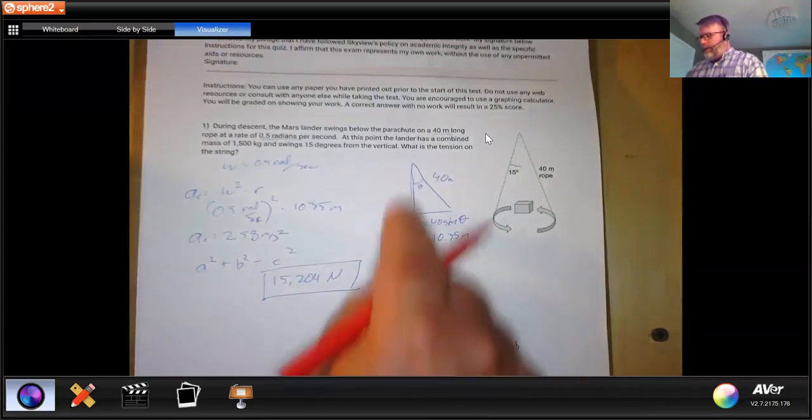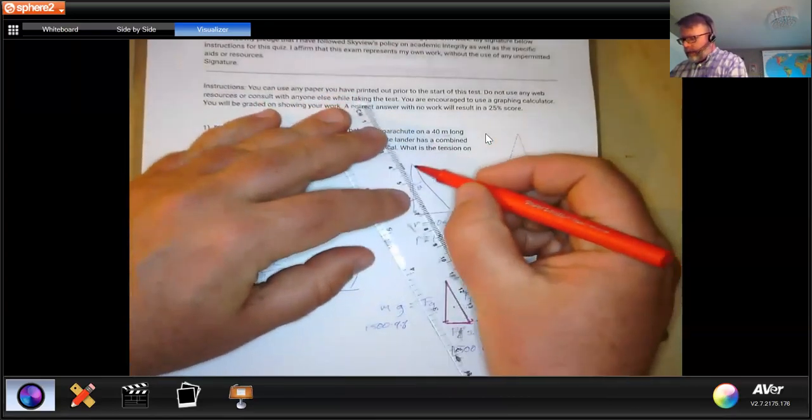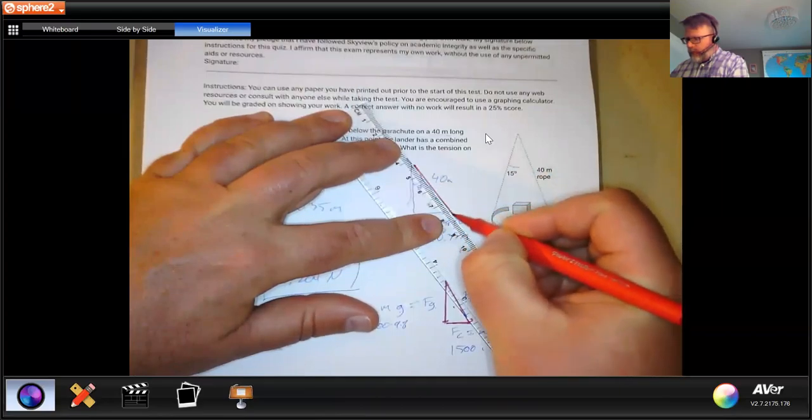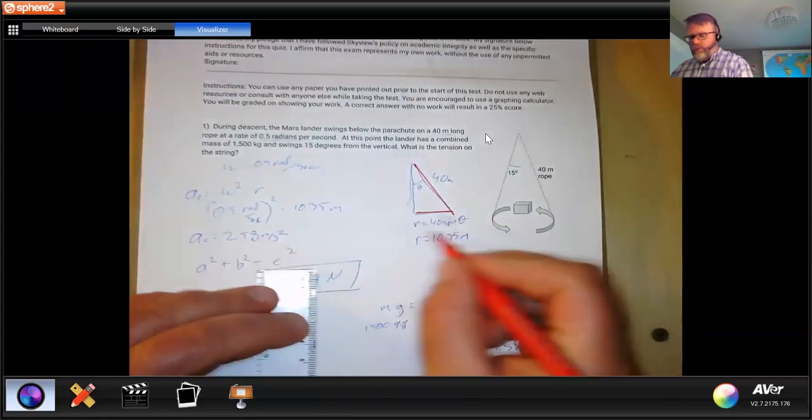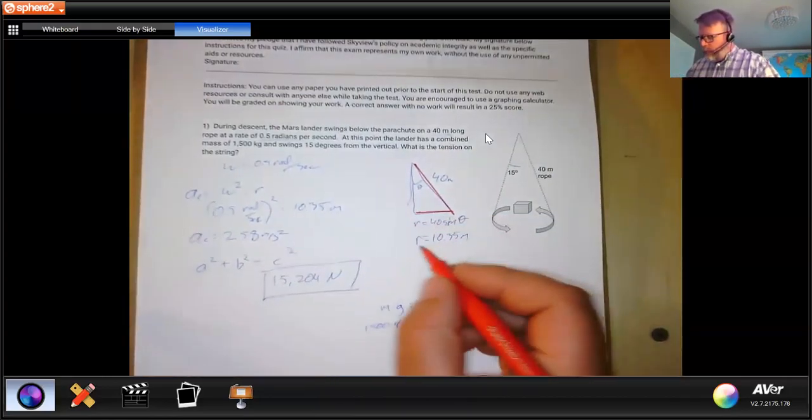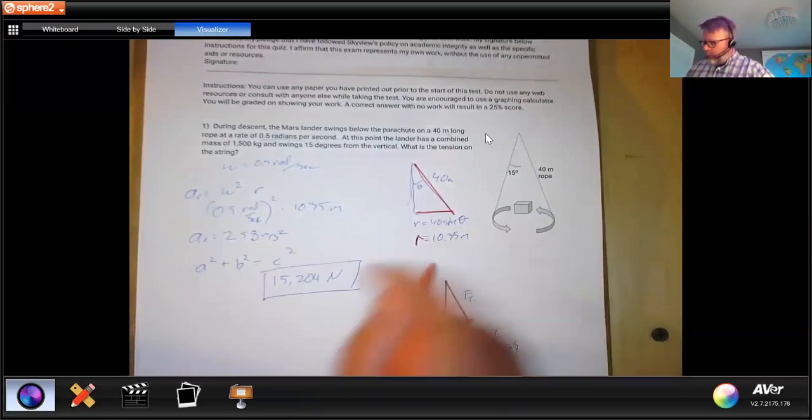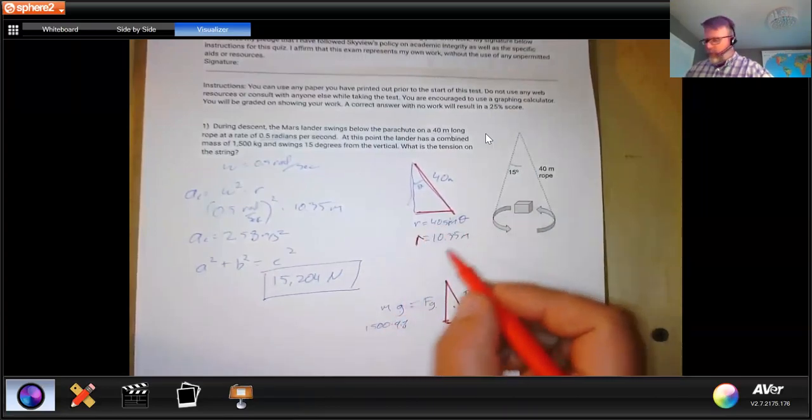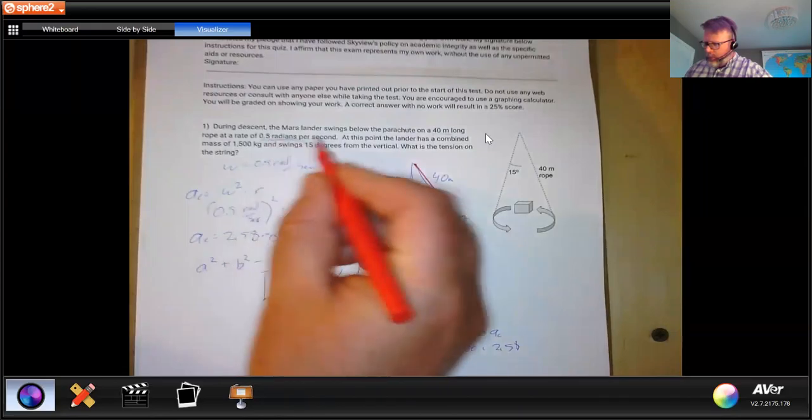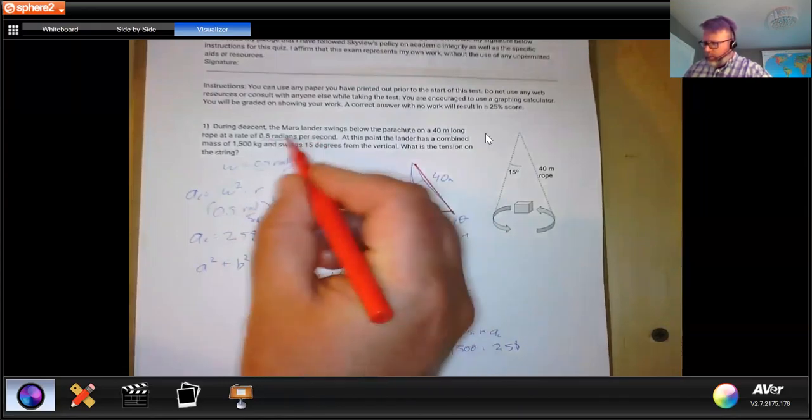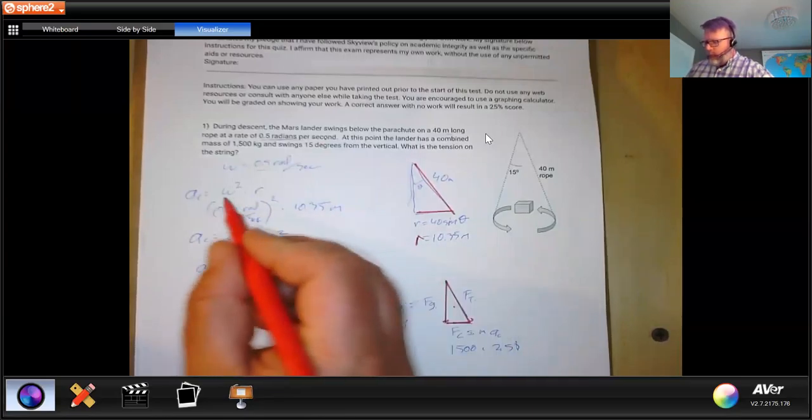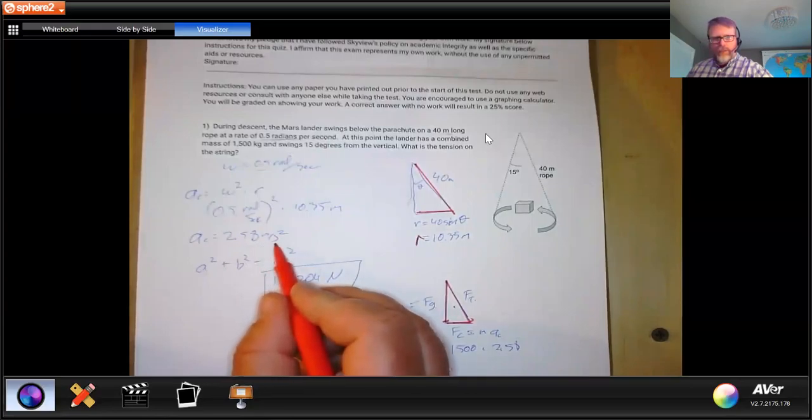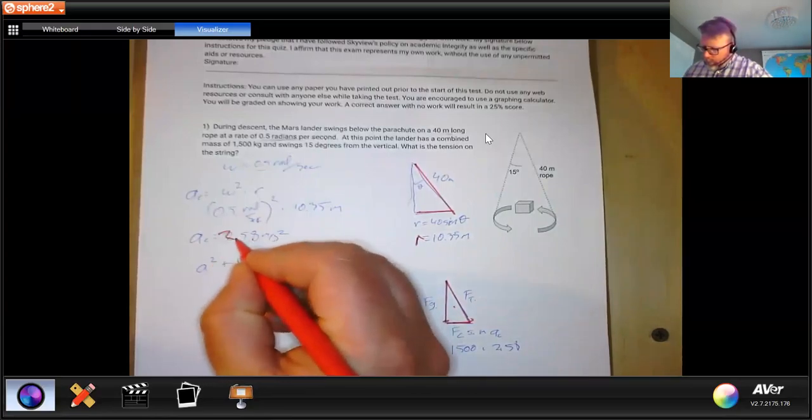We're going to have a very similar triangle over here, as we looked at our length of the rope, and then how much of that resulted in the centripetal motion being our radius. So 40 sine theta gives us the radius of the circle. So now we know our angular velocity, this is in the correct units, and we know our radius. So omega squared r will give us our centripetal acceleration. So that was 2.58.